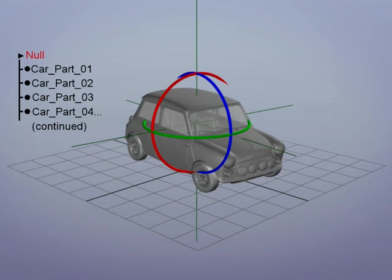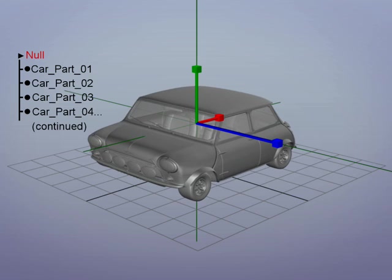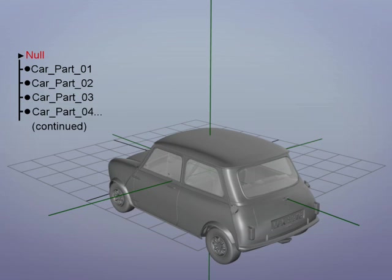Now, we simply select the null to rotate, scale and move all the objects at once.